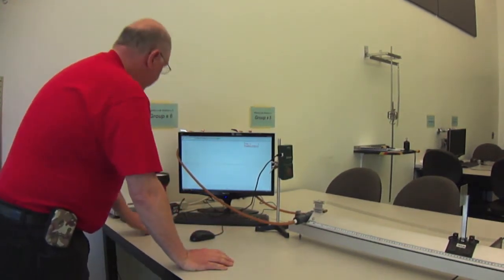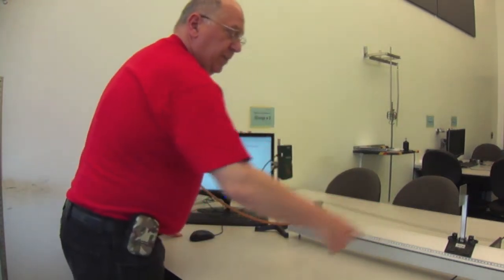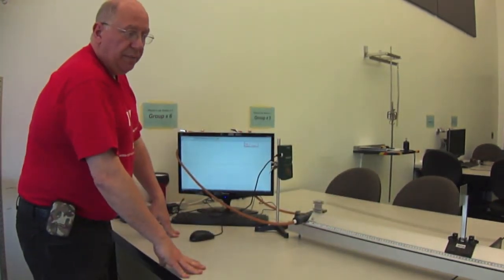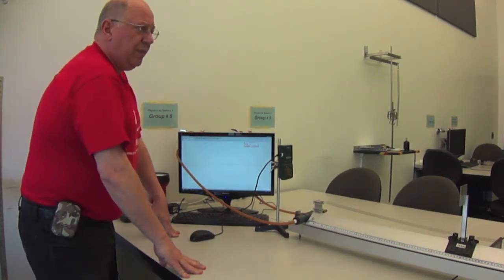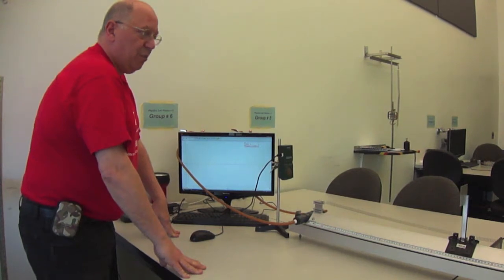Once we've done that, we will turn on the air supply again, displace the glider by a certain amount. And this amount may or may not be important. This is something that you'll be able to determine in the lab.